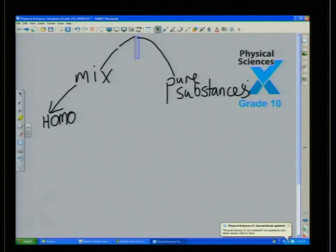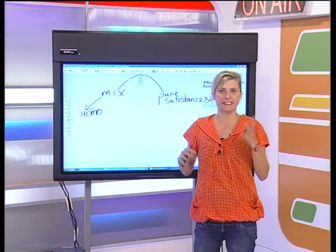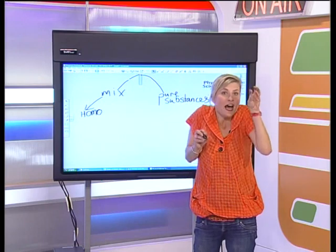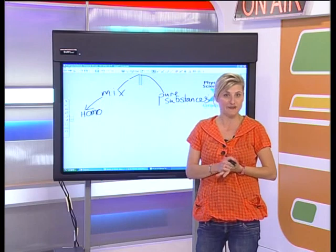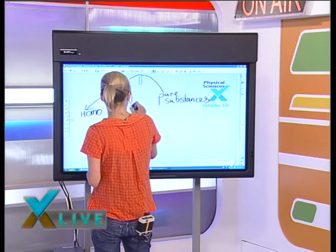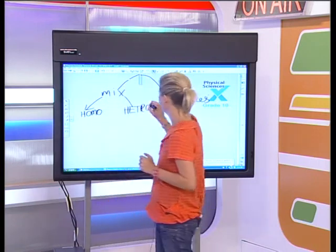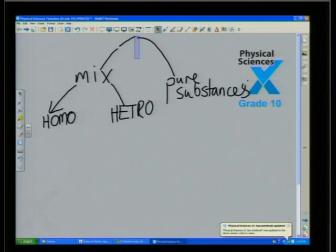'Homo' means the same. Examples of homogeneous mixtures would be coffee in water, or a milkshake if you've blended it properly — you can't really see the ice cream, flavoring, and milk as individual things. Then we get a heterogeneous mixture — an example would be my popcorn and Smarties, where I can still pick out each component.